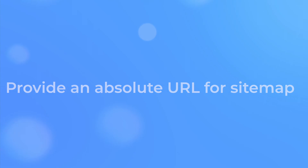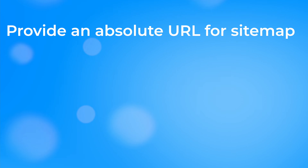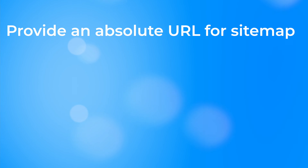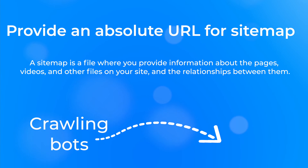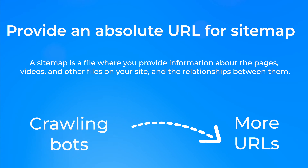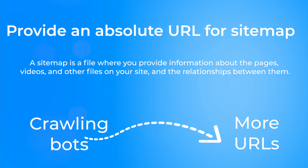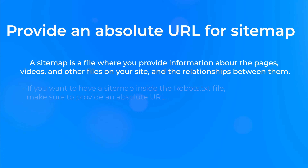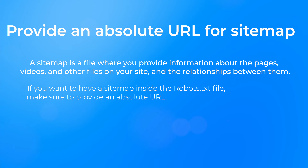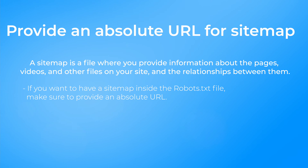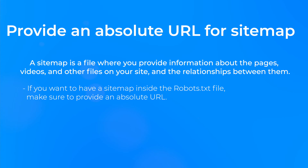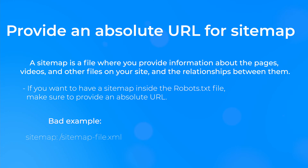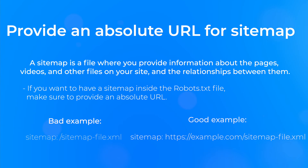The last but not least is to provide an absolute URL for a sitemap. Sitemap files are a great way to let search agents know about the pages on your website, together with information about when they were last changed. If you choose to submit a sitemap file in robots.txt, make sure to use an absolute URL. Here is a bad example and here is a good one.